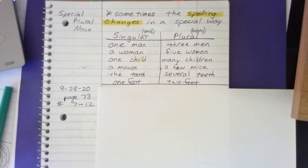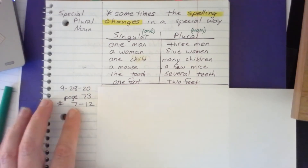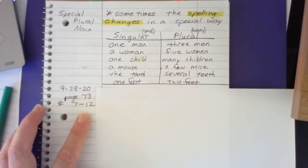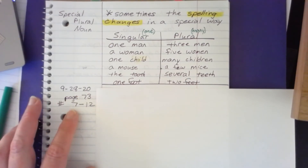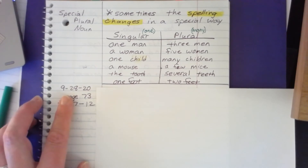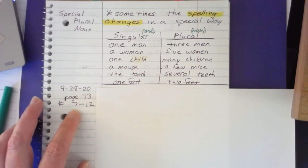Okay, now we're going to do page 73, numbers 7 through 12. Make sure you put today's date — this is Monday, September 28th — and write page 73 and numbers 7 through 12.